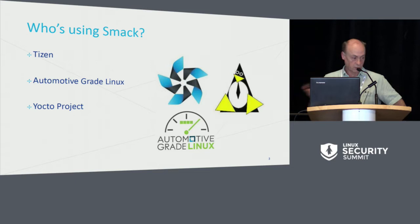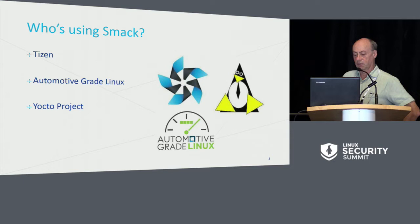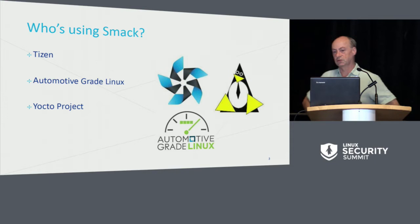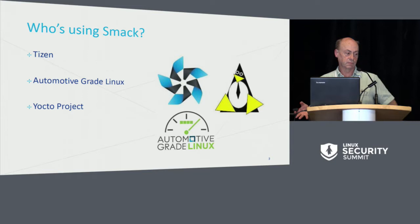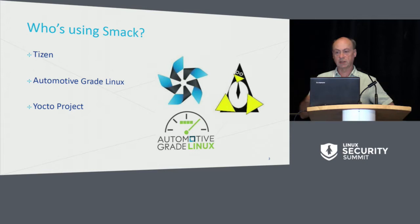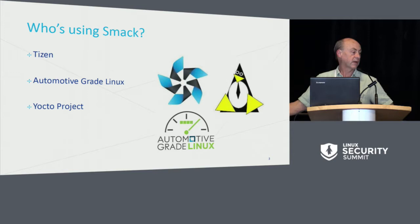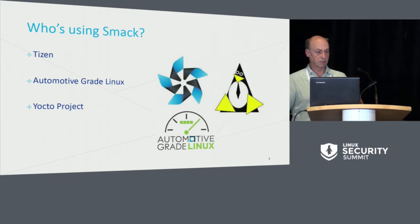So if you have a new Toyota, it probably has SMAC in it. There's also a project called the Yocto project, which has been described as a Linux-o-tron. If you don't want to use an existing distribution, you can use the Yocto project to define what you want in a Linux system and create your own. It has fairly extensive support for SMAC as well. In addition to Tizen and Automotive Grade Linux, we're seeing a bunch of one-off kinds of things where people are doing a board support project or a special-purpose build, and they like SMAC because it's somewhat easier to work with from a policy standpoint than some other systems.